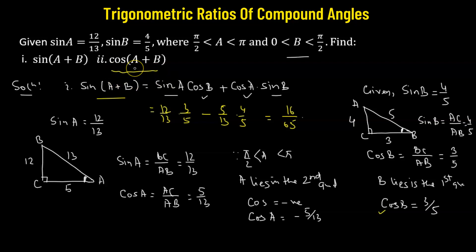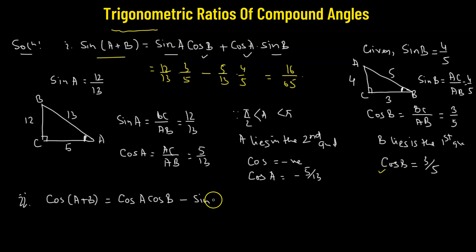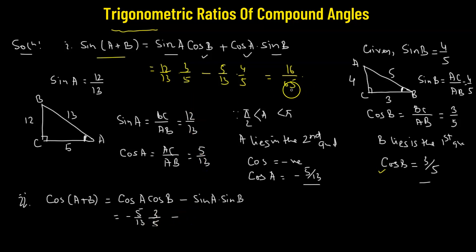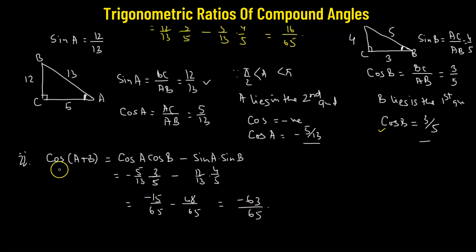Now let's find the value of cosine of a plus b. The expansion of cosine(a+b) equals cosine a times cosine b minus sine a multiplied by sine b. Cosine a is negative 5 over 13, cosine b is 3 over 5, sine a is 12 over 13, and sine b is 4 over 5. This gives us negative 15 over 65 minus 48 over 65, which equals negative 63 over 65. So the value of cosine(a+b) is negative 63 over 65.